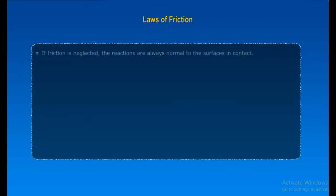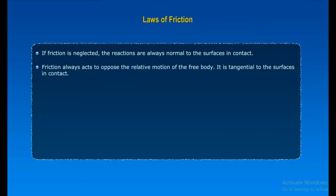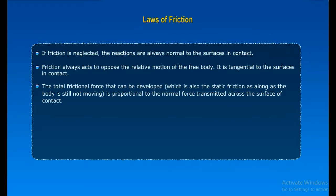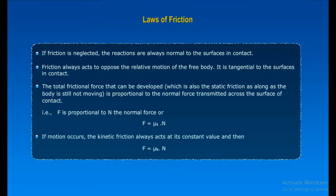Laws of Friction. If friction is neglected, the reactions are always normal to the surfaces in contact. Friction always acts to oppose the relative motion of the free body. It is tangential to the surfaces in contact. The total frictional force that can be developed, which is also the static friction, as long as the body is still not moving, is proportional to the normal force transmitted across the surface of contact. That is, F is proportional to N, the normal force. Or, F is equal to product of mu S and N. If motion occurs, the kinetic friction always acts as its constant value. And then F is equal to the product of mu K and N.